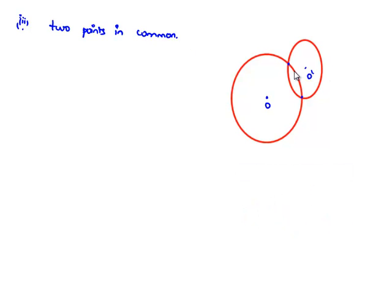There is no possibility for another pair of circles to exist that intersect in three points or four points. Therefore, we can say that a pair of circles can have maximum two points in common.